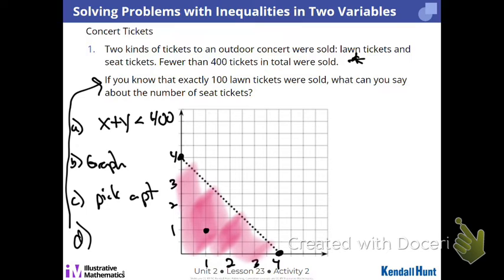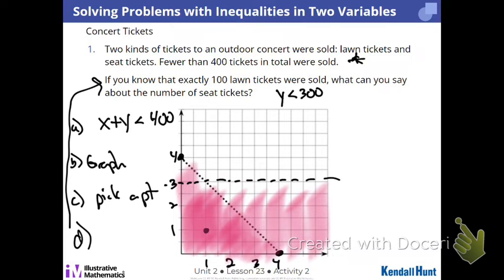Now let's work on answering it — D. If there's 100 lawn tickets, what do we know about seat tickets? They have to be less than 300, because we have to keep it under 400. So X is lawn, which means Y would need to be less than 300. I'm going to graph that right here — dashed line. And if I'm below that, look where I double-cross. Anywhere in there will give me something where I have less than 300, but also the combination is less than 400.